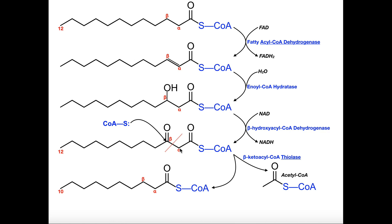The thiolase cleavage does two things. First, we lose the two carbons at the alpha and beta positions, which means we get off an acetyl-CoA. With each round of beta-oxidation we get a molecule of acetyl-CoA, which can then fuel the citric acid cycle. Second, the remaining chain is shortened by two carbons. Since the attacking CoA attaches to the remaining chain, we still have a CoA on it — but now it's a 10-carbon fatty acyl-CoA instead of 12.